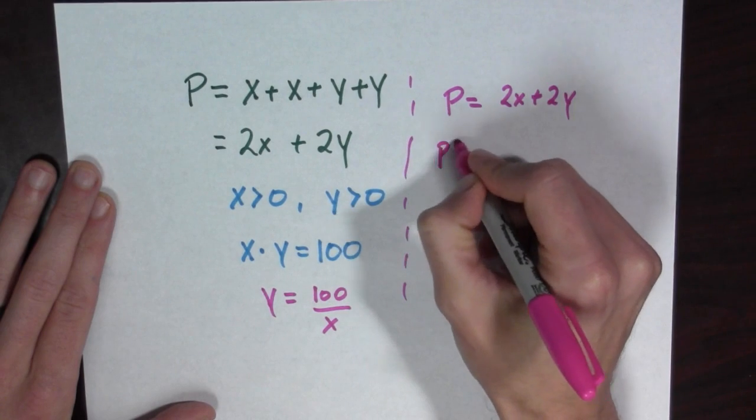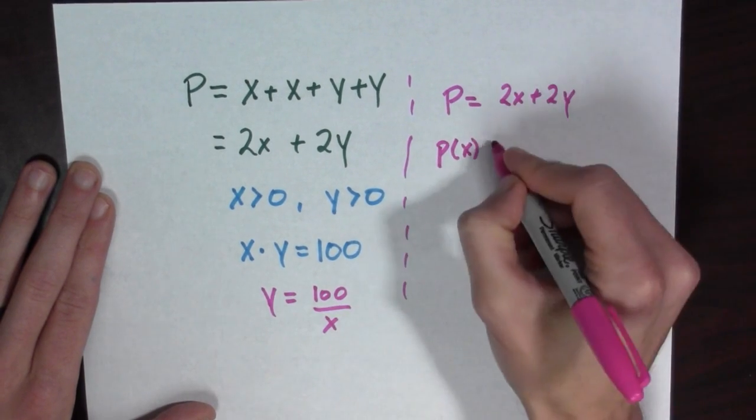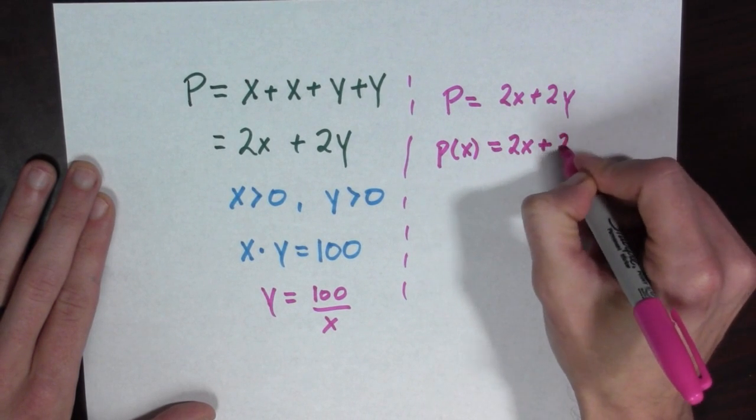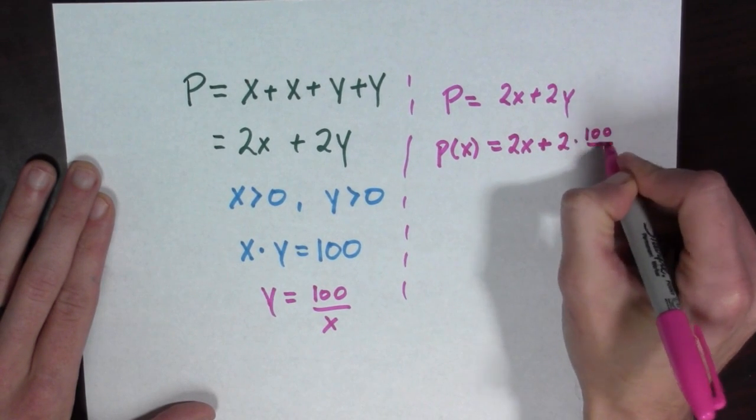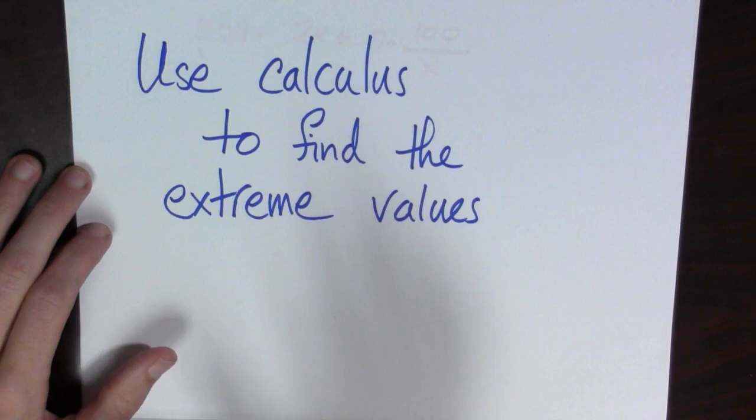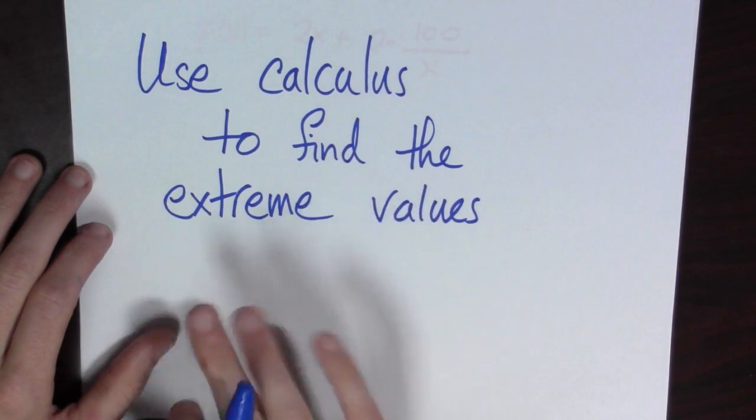And so I can now write the perimeter with respect to x is equal to 2x plus 2 times 100 over x. And after all this, this is in fact calculus class. So now you need to use calculus to find the extreme values.